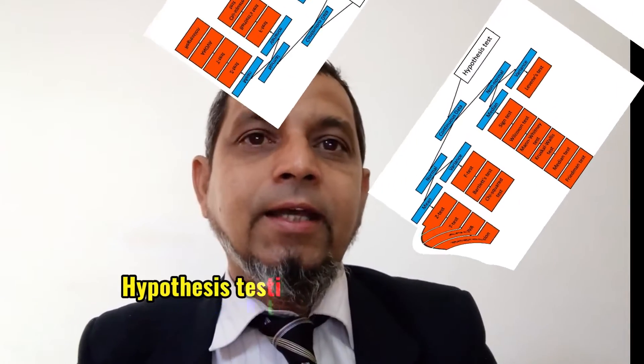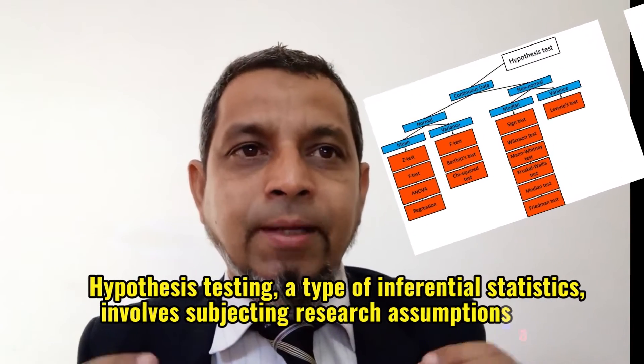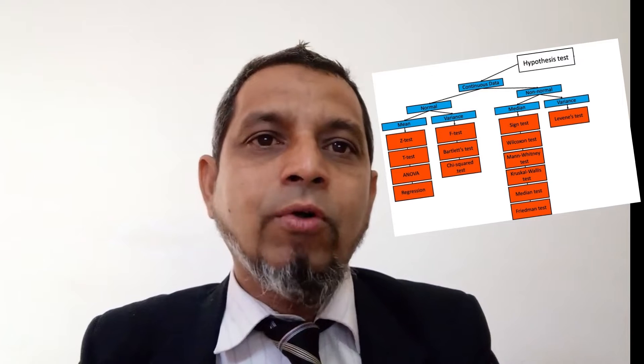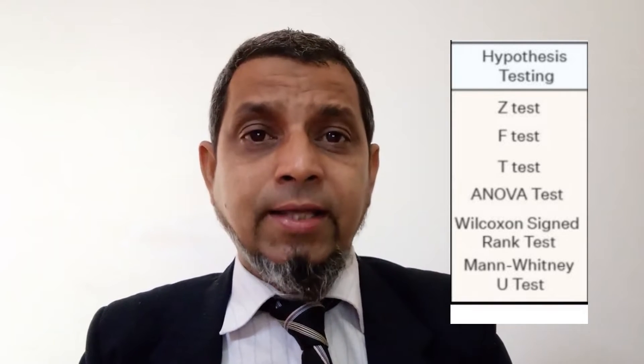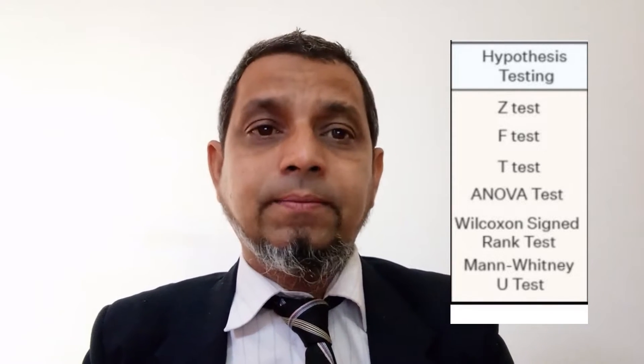Point number two: what are the types of inferential statistics? There are two main types: number one, hypothesis testing, and number two, regression analysis. Hypothesis testing is a type of inferential statistics that involves subjecting research assumptions about specific population parameters to examination. Methods of hypothesis testing include: number one, t-test; number two, f-test; number three, z-test; number four, chi-square test; and number five, ANOVA.